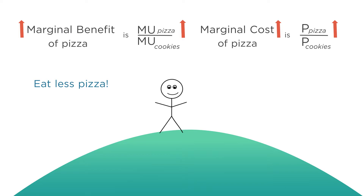Now this might seem strange, but it's a key lesson. The principle of diminishing marginal utility states that the more of a good you consume, the lower the marginal utility. So to increase marginal utility, you need to consume less of the good. Meanwhile, to consume less pizza, you have to consume more cookies — otherwise you wouldn't be spending all your budget. So what does that do to the marginal utility of cookies? It lowers it. Each cookie is worth less to you as you have more of them.